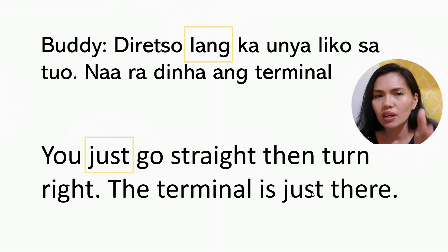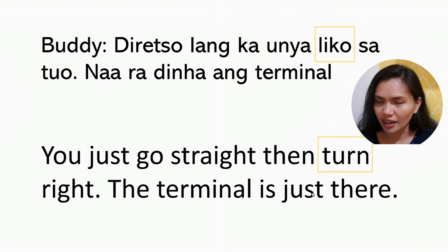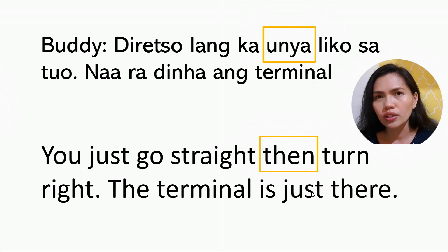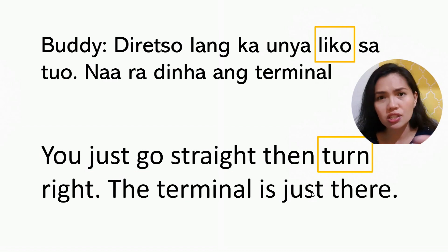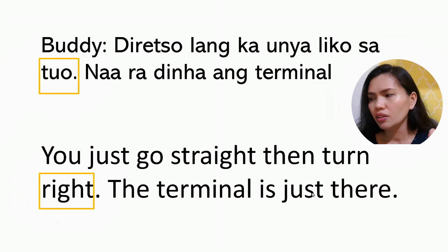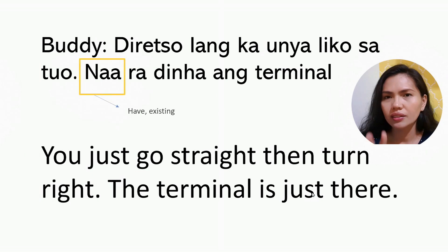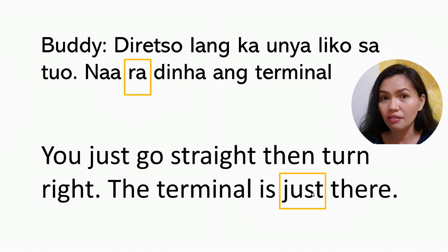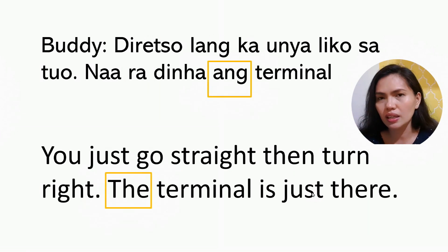Let's break that down. Dritso is a Spanish word meaning 'to go straight.' Lang means 'just.' Ka is 'you.' Unya means 'then.' Liko means 'to turn.' Sa to'o — to'o means 'right side.' Na ra dinha means 'it's just there' — na ra means 'already just,' dinha means 'there.' Ang terminal means 'that terminal.'